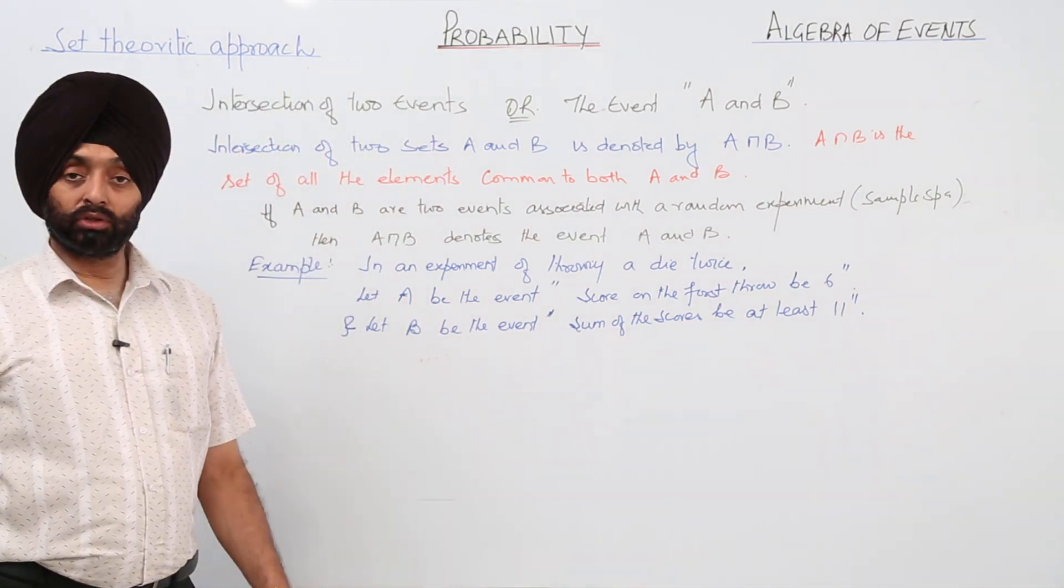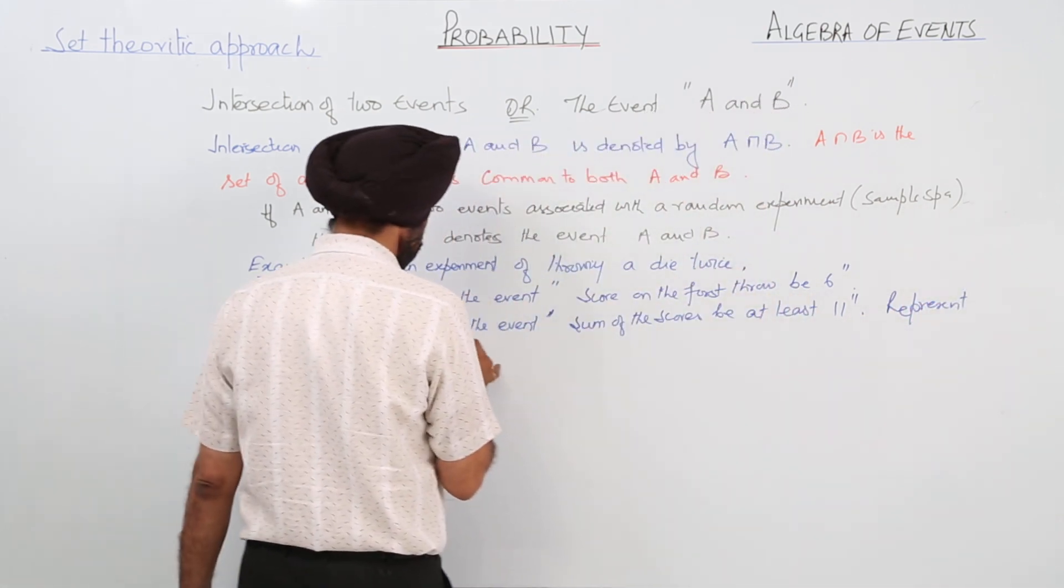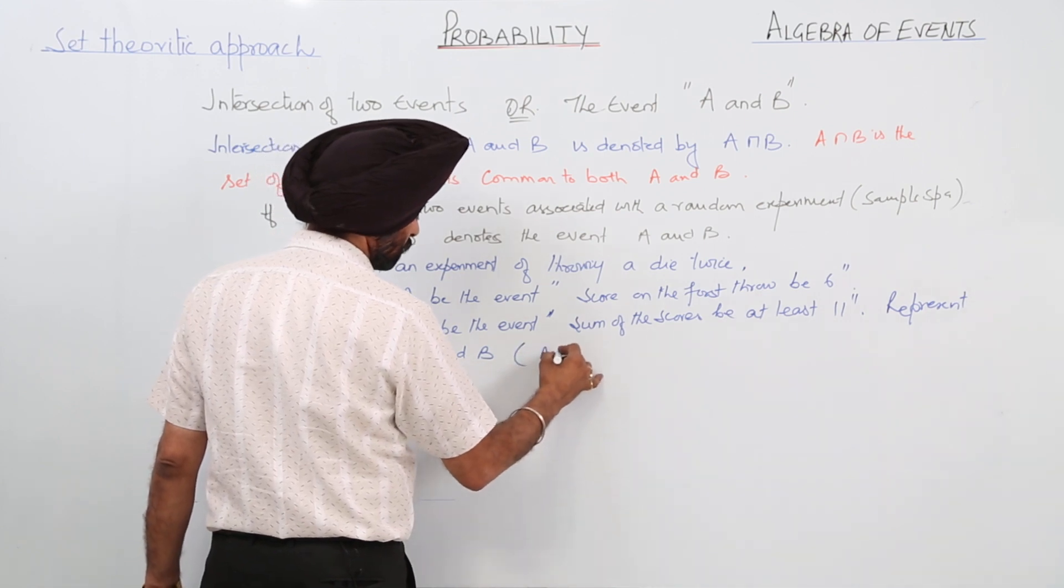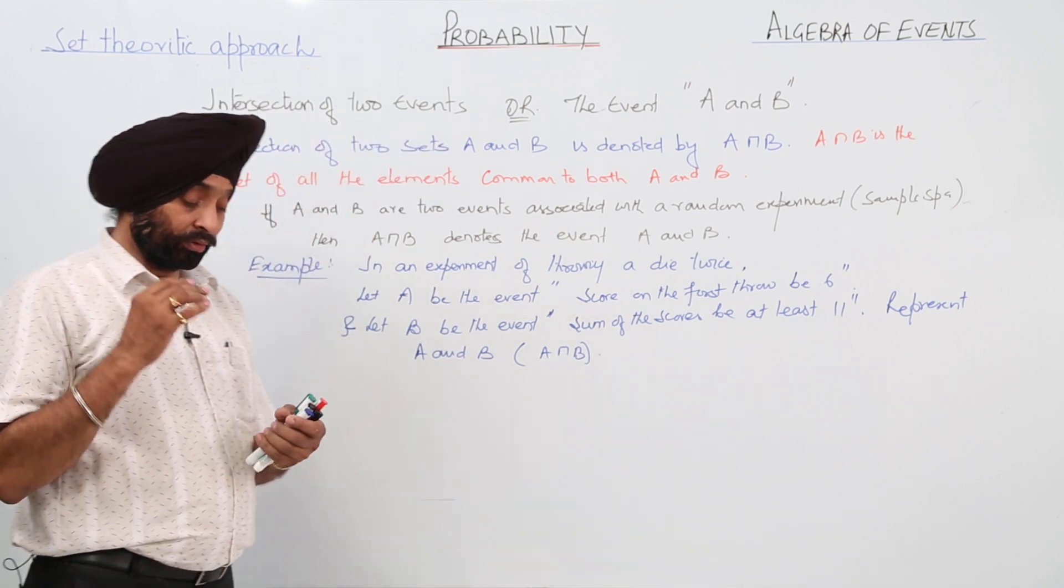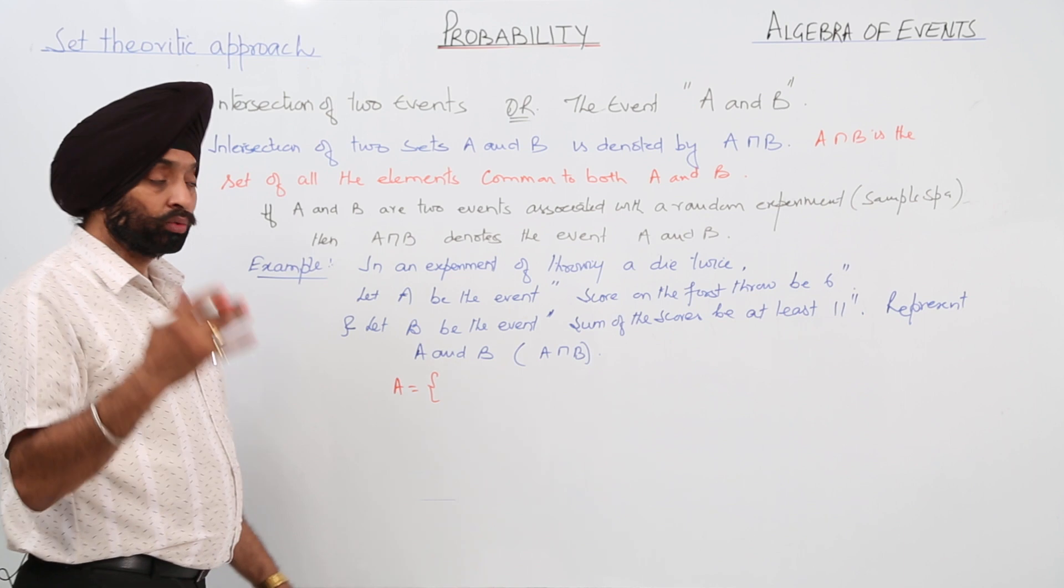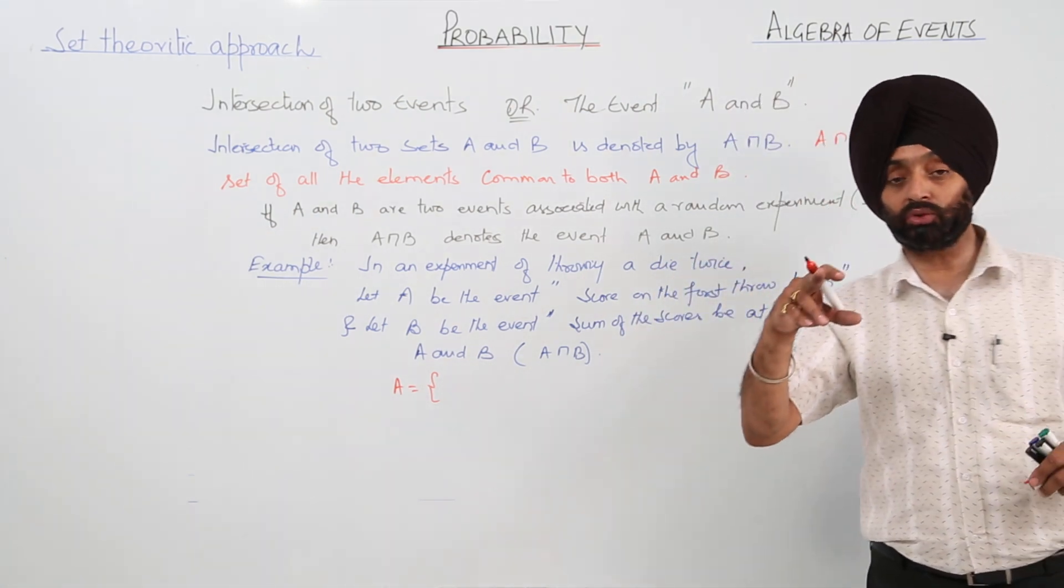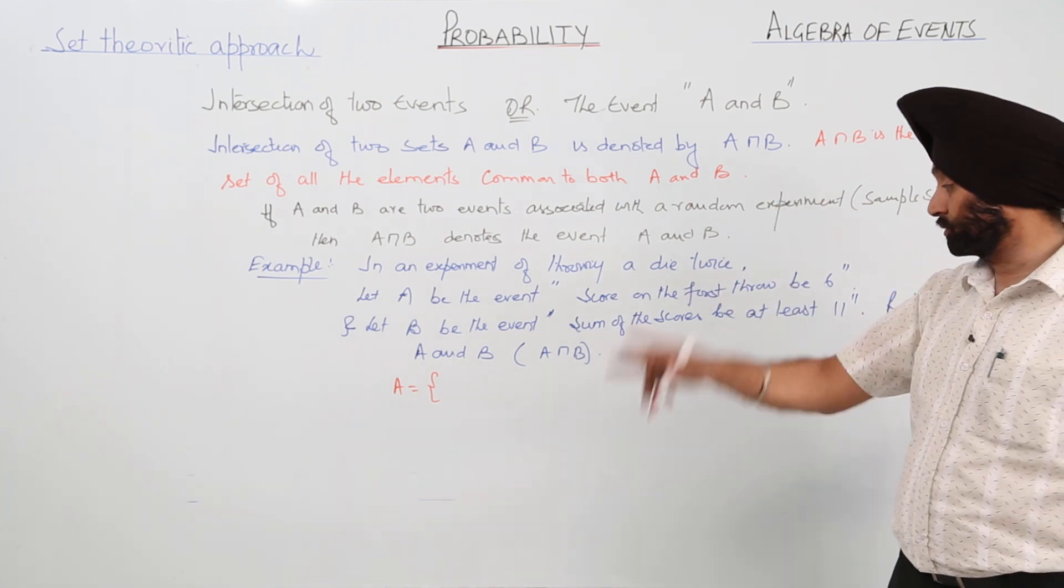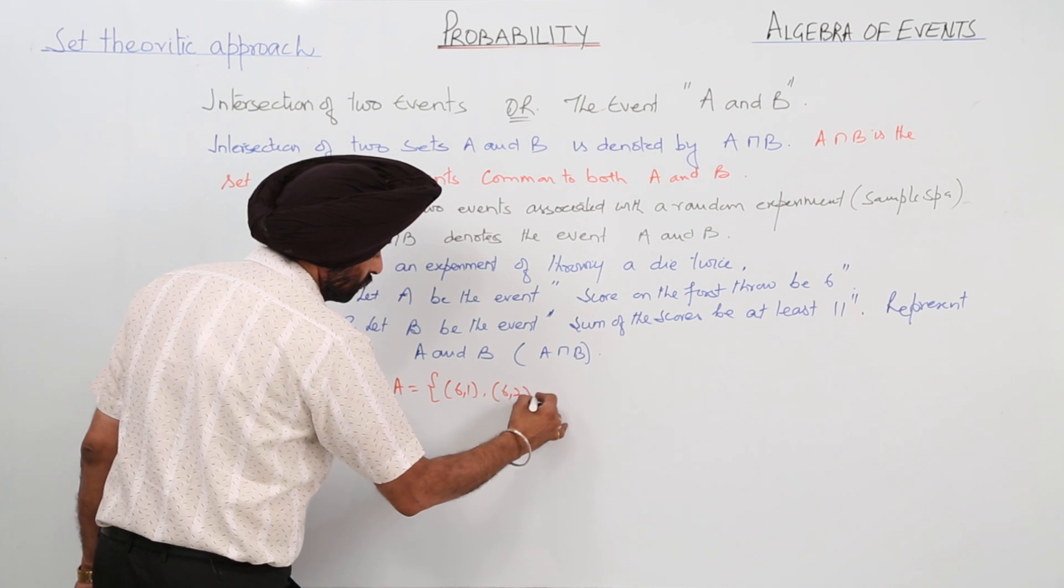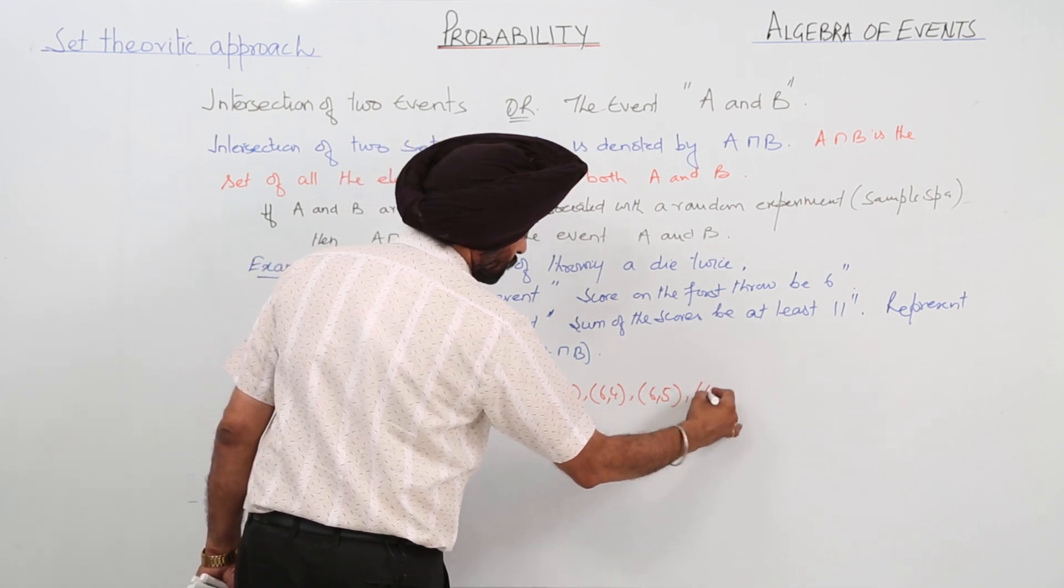Now we are having two events A and B. Now represent A and B, or A intersection B. Set A will be represented how? Let A be the event score on the first throw is 6, means whenever we are throwing first, score should be 6. But we are throwing it twice, so the ordered pairs are 6,1, 6,2, 6,3, 6,4, 6,5, 6,6.